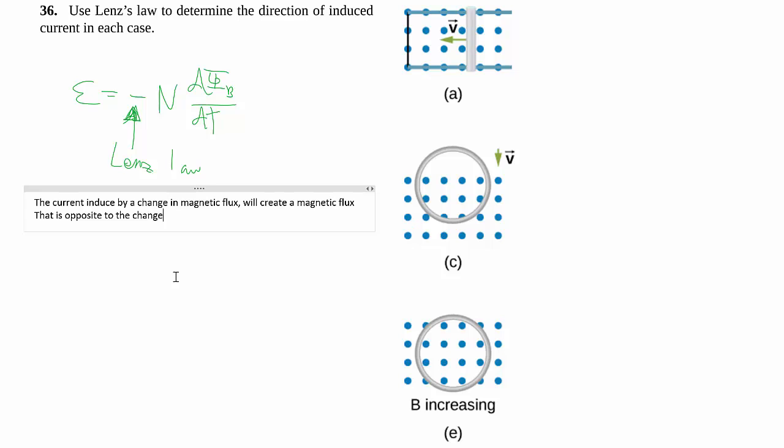Instead we will get a current that creates a magnetic field that tries to undo the change we're trying to make.